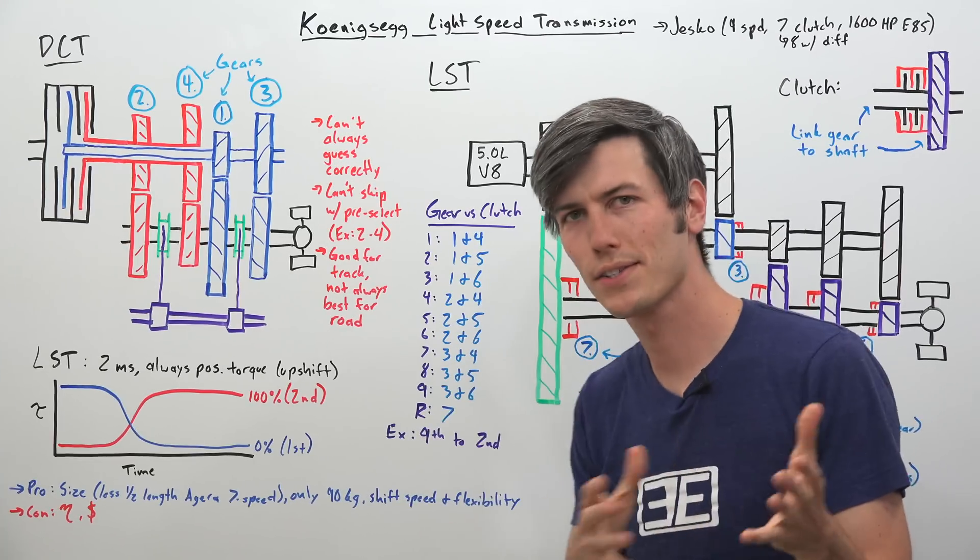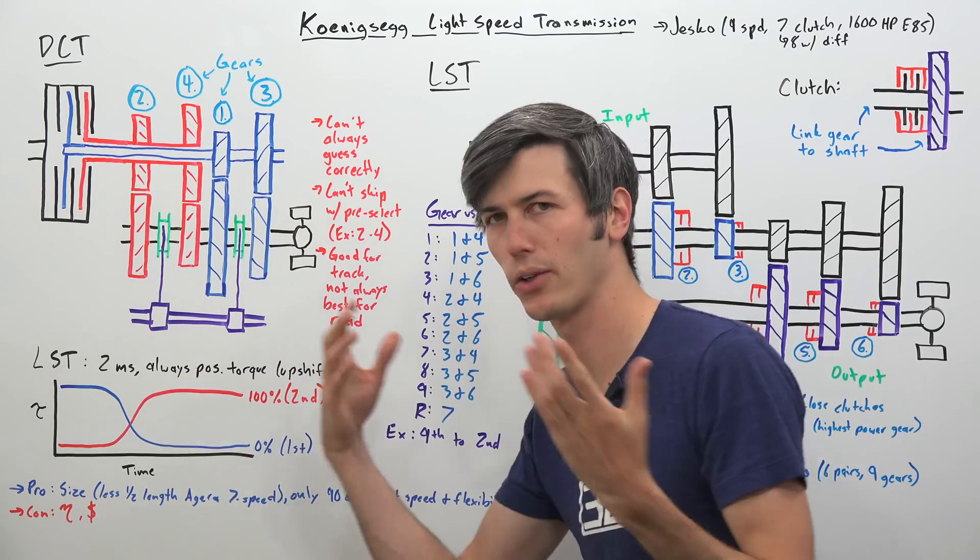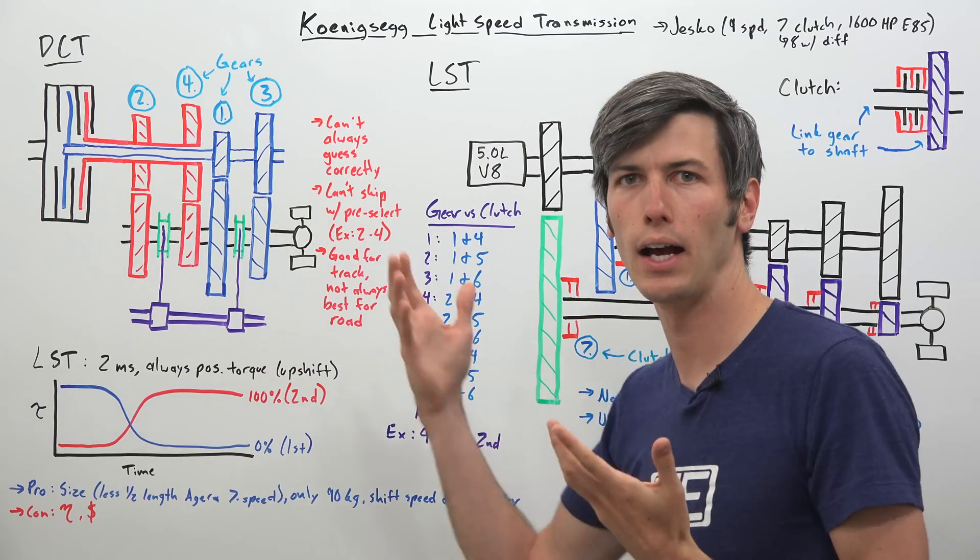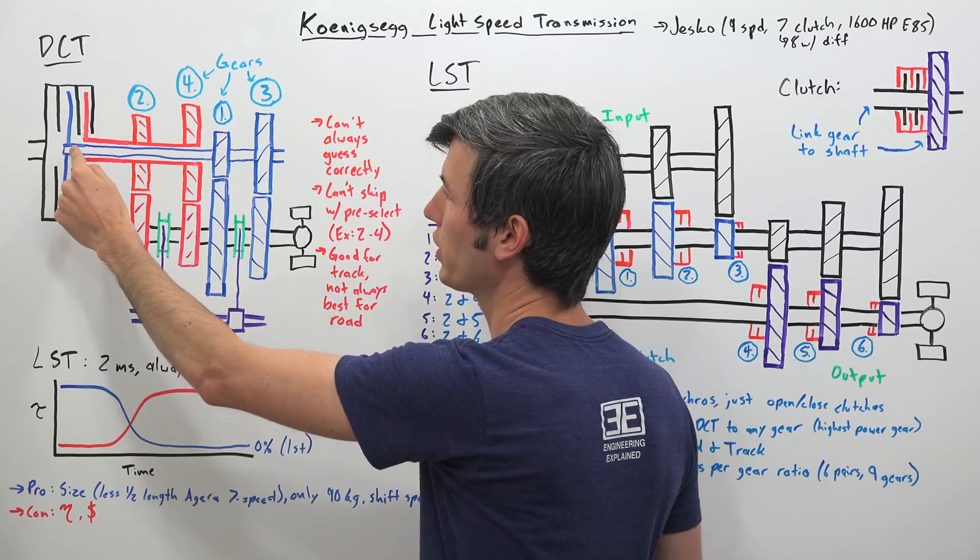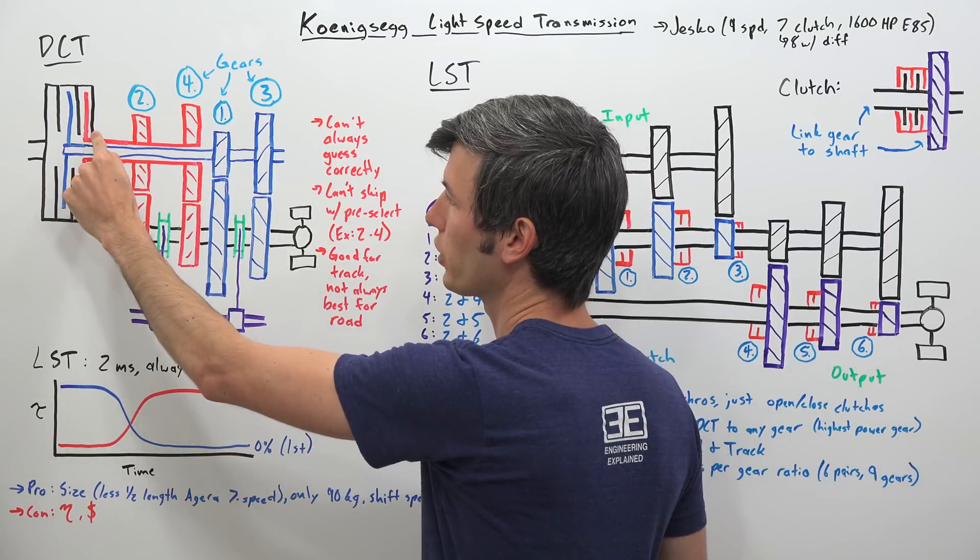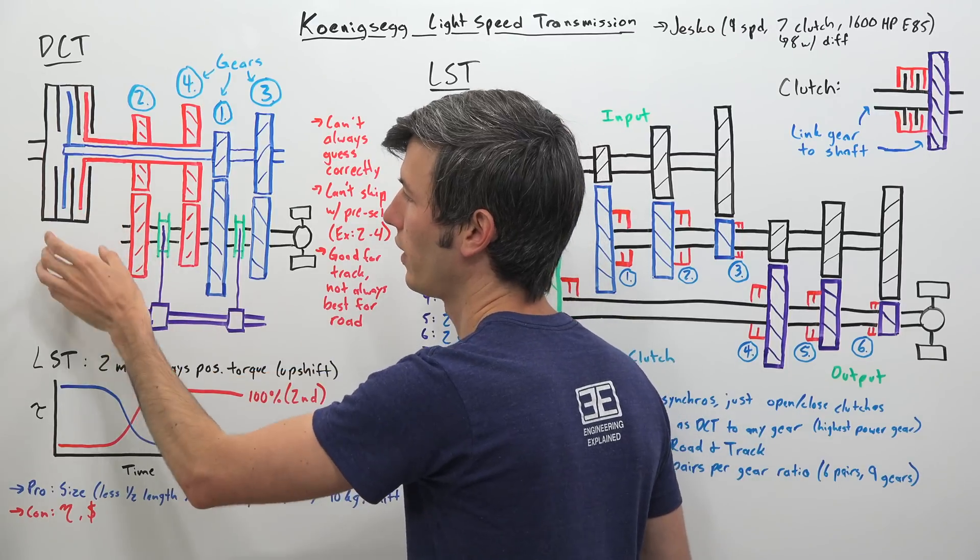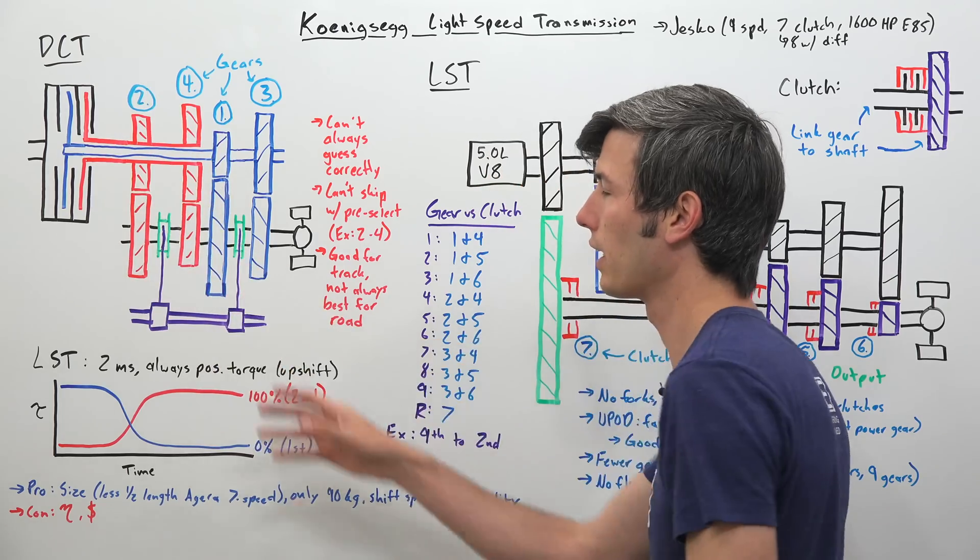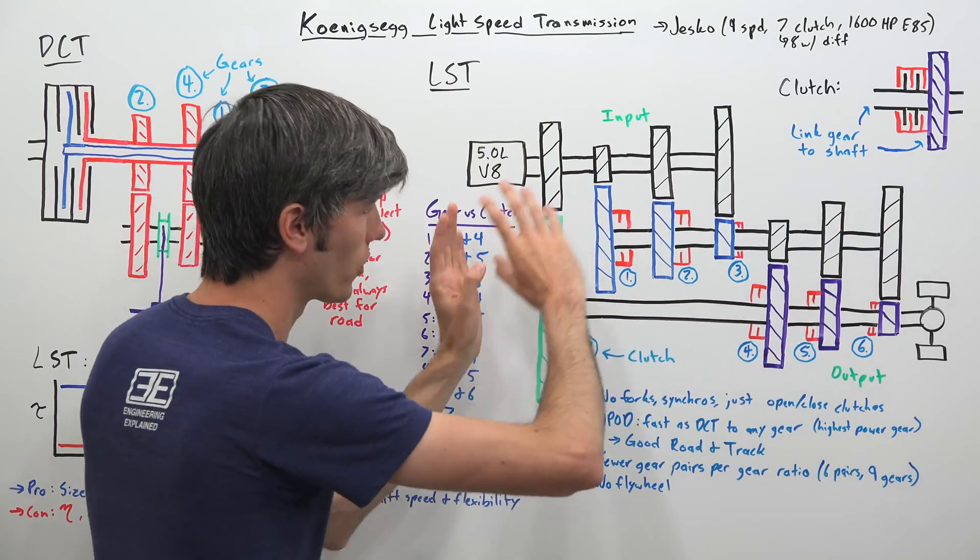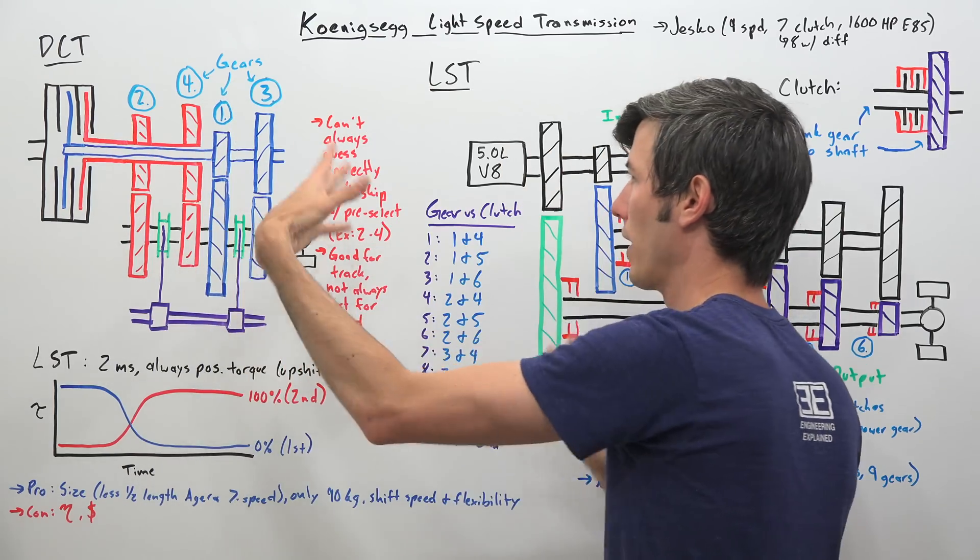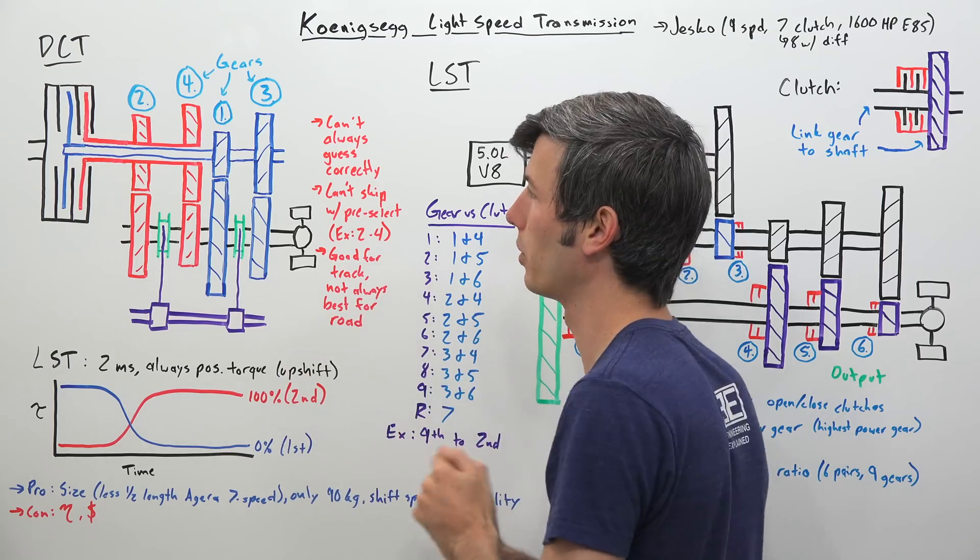So how does this compare to a dual clutch transmission? So here we have a simplified four-speed. Generally speaking, they're going to have more than four speeds, but we're just using this to better understand how it works. So we've got two separate shafts. On one shaft, you have gears one and three. On the second shaft, with the second clutch, you have gears two and four. Now, I've just drawn single clutches here to simplify it. Generally speaking, in a dual clutch, these are going to be wet, multi-plate clutches, and same with all of these clutches. These are all going to be wet, multi-plate clutches. So that's just a durability thing, makes them last quite a long time if they're bathed in oil, and there's multiple discs.